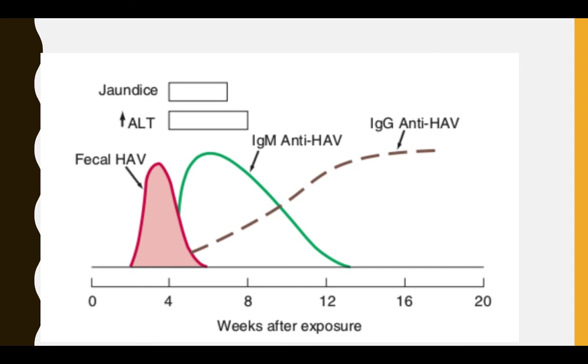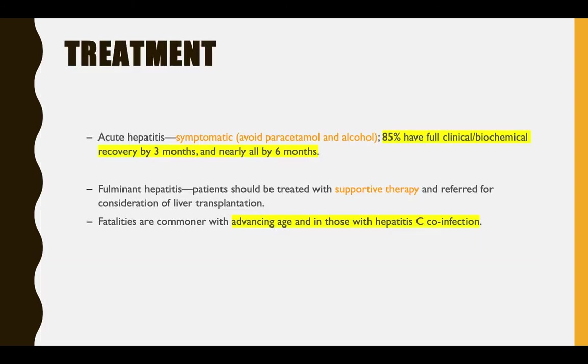You will have the symptoms, and you will have anti-HAV IgM with the symptoms, so diagnosis should be more straightforward. For treatment, as mentioned for all hepatitis, you have to reduce the load on liver cells — avoid alcohol and any drugs with liver clearance. Fulminant hepatitis can happen with Hepatitis A, especially with advancing age or co-infection with HCV.